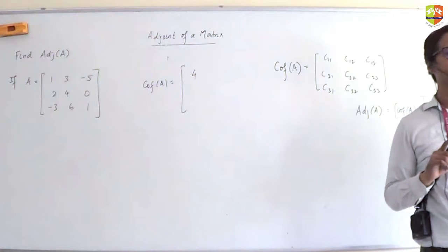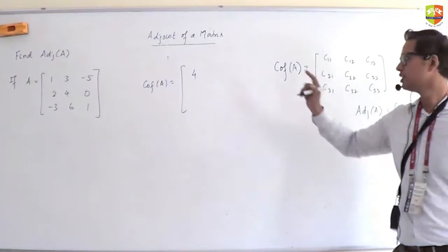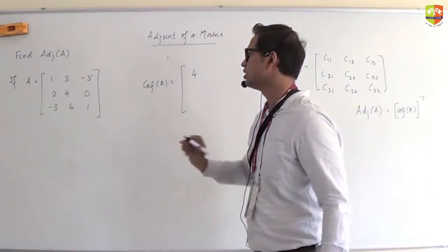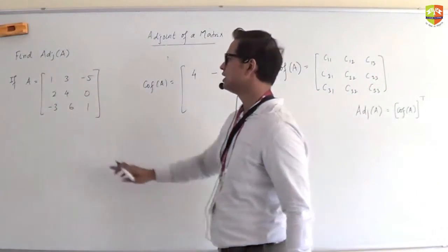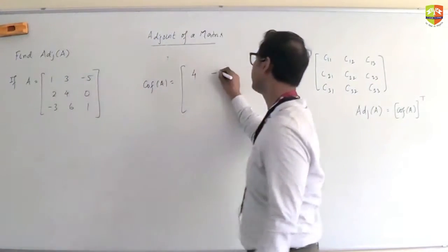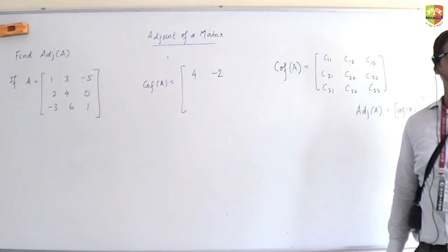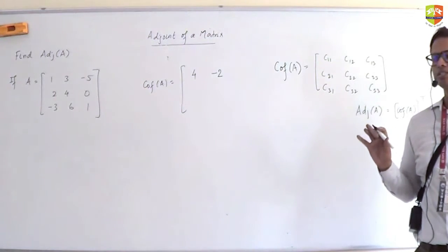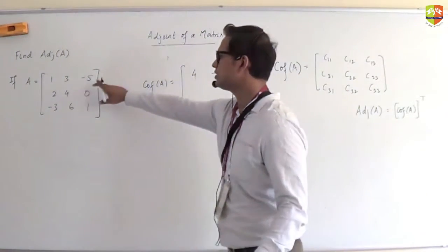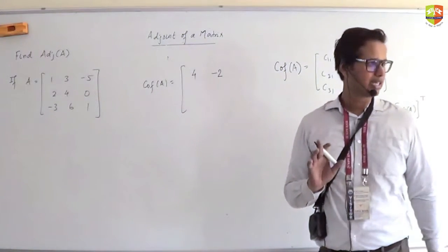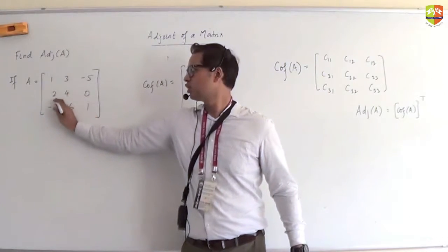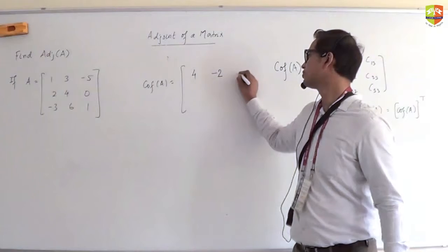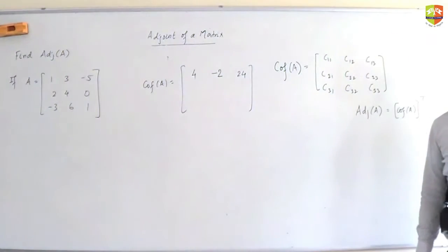What about 3? First of all, 3, the sign attached to it is minus. Then hide the column and the row in which 3 falls, so it will be 2. So cofactor is minus 2. Next, for minus 5, the sign would be positive again. So hide the column, hide the row. What do you see? 2, -3, 6, 1. So 12 minus minus 12 is 24.